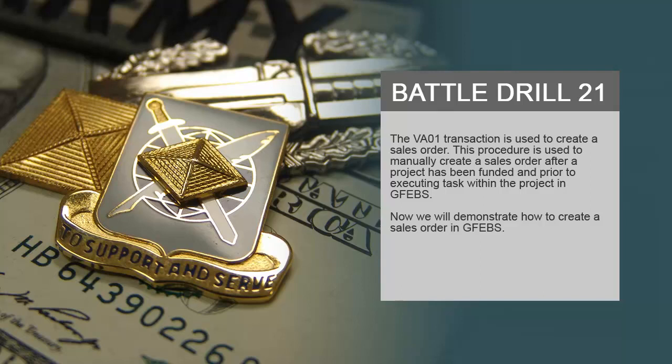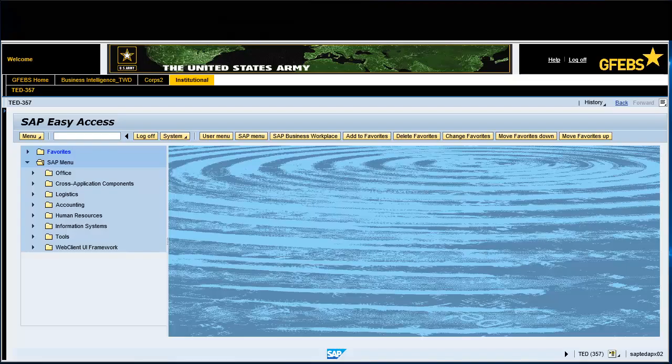The VA01 transaction is used to create a sales order. This procedure is used to manually create a sales order after a project has been funded and prior to executing tasks within the project in GFIBS. Now we will demonstrate how to create a sales order in GFIBS. Type the transaction code VA01 in the command field and press Enter.